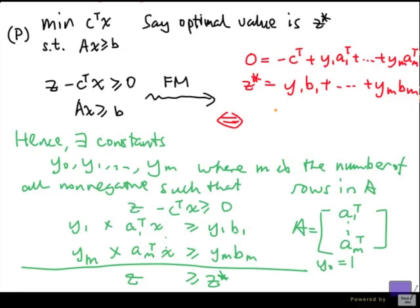Now, we can rewrite this in a different way. So we must have y transpose a equal to c transpose and y transpose b equal to z star. So let me summarize. If p had an optimal solution and the optimal value of this problem is z star, because of Fourier-Motzkin elimination method, we can find non-negative constants y0, y1, up to ym, such that if we use these constants and take a combination of the original inequalities with these constants, we'll get inequality z greater than z star.